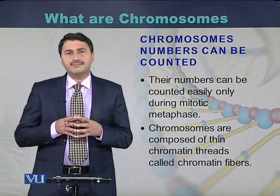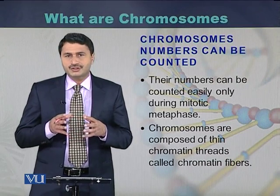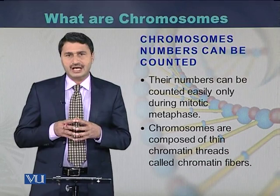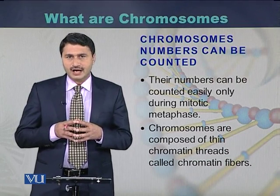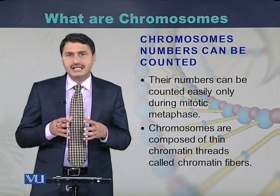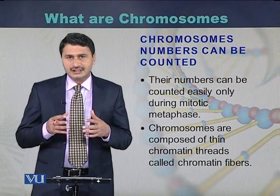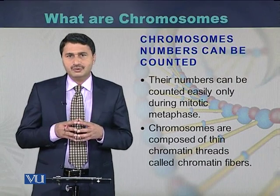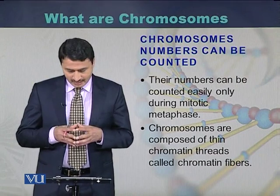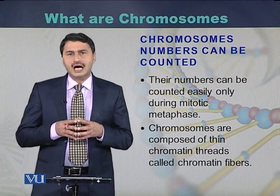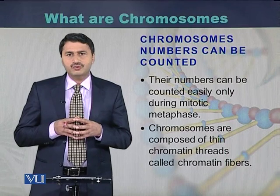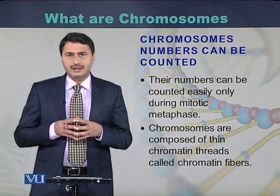Chromosomes — their number can vary from species to species. In some species their number is less, while in some species their number can be large, reaching up to 300 chromosomes per cell. Chromosomes are composed of a fiber called chromatin fiber.